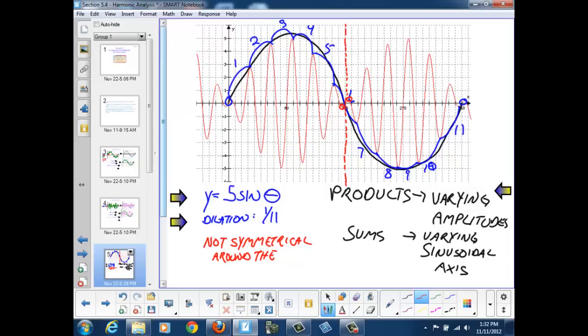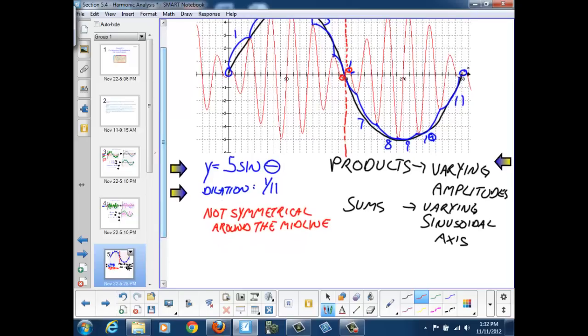Since we've already determined that our envelope curve is a sine function, that means that our second function needs to be a cosine of 11 theta.